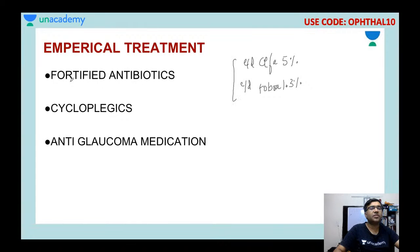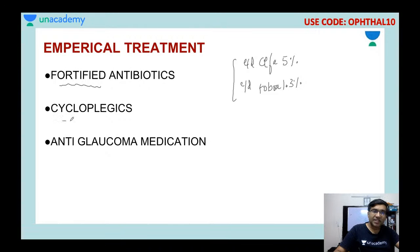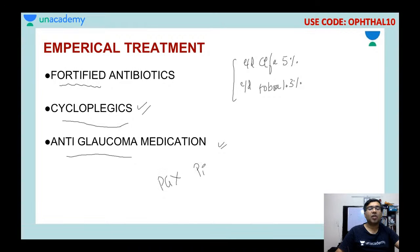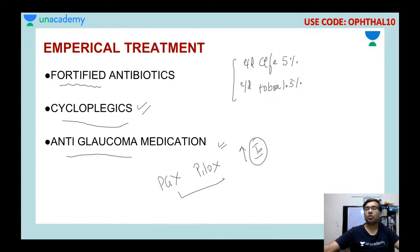Because the patient has uveitis, start cycloplegics. These patients may also have high intraocular pressure, so start anti-glaucoma medications. However, avoid two anti-glaucoma medications in these patients: prostaglandin analogs and pilocarpine, because both can exacerbate the inflammation.